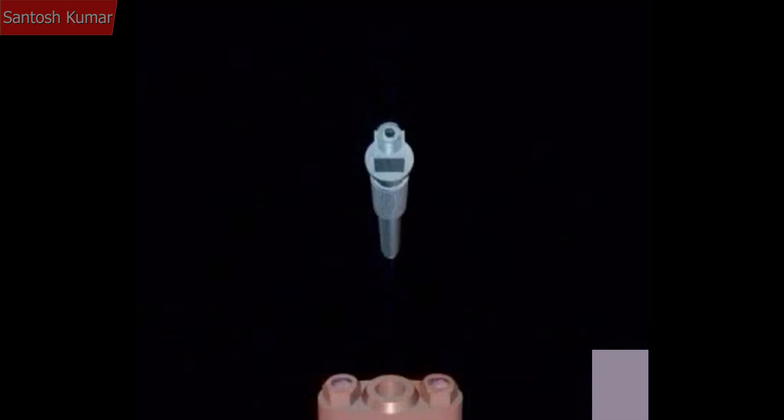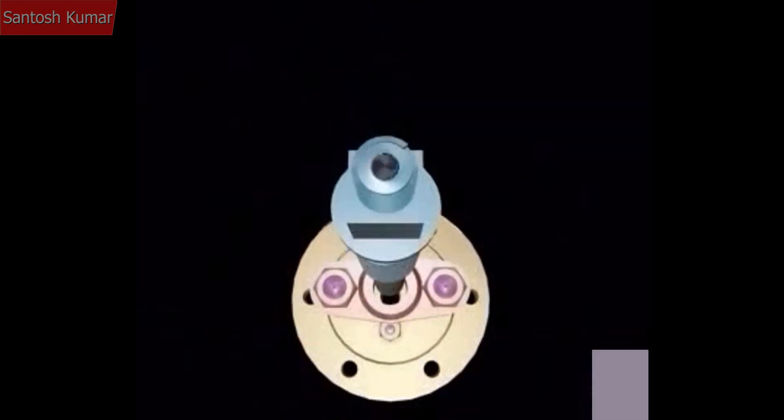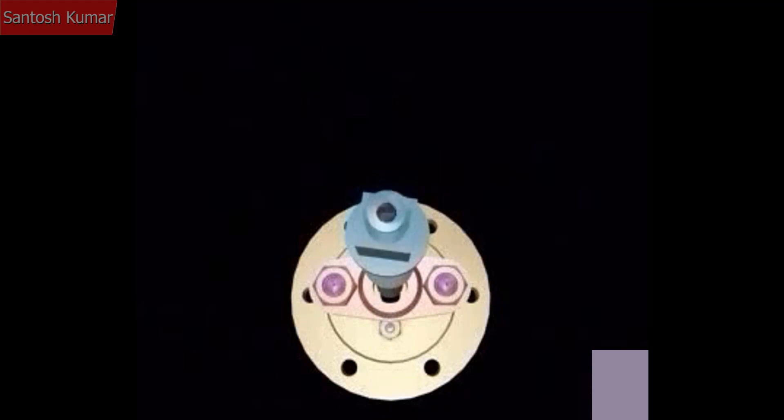The spindle is threaded at one end which works in the threaded hole of the bridge so that the spindle can be raised or lowered.